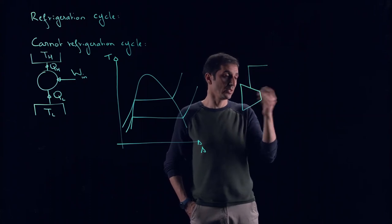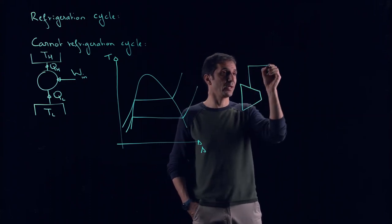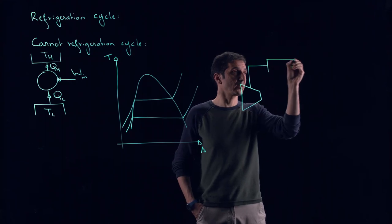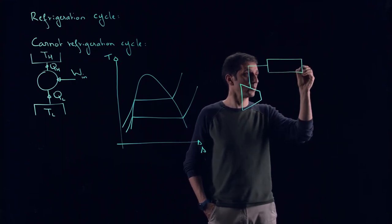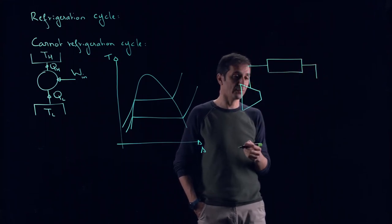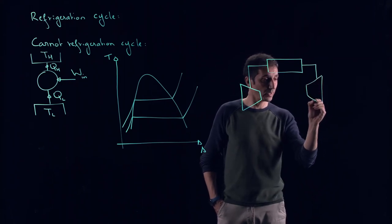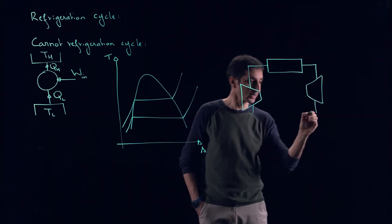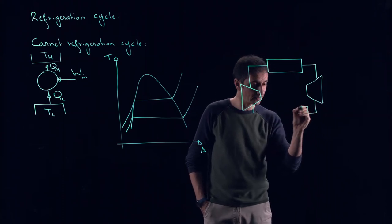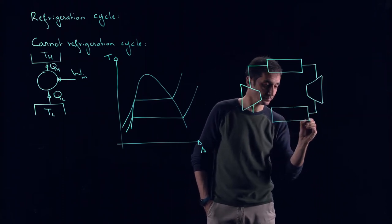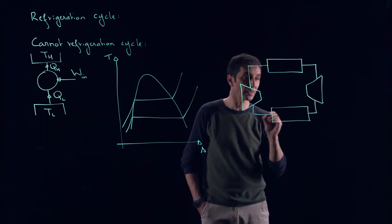We have here something to provide work, we have here kind of a heat exchanger, we will give the different names, and here we are providing work, this is for a power cycle, and we are rejecting heat here.